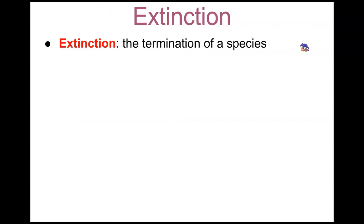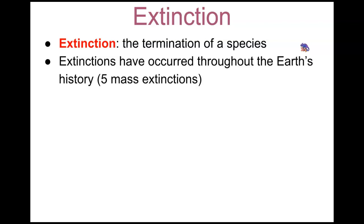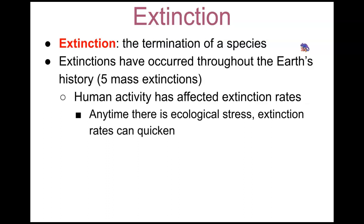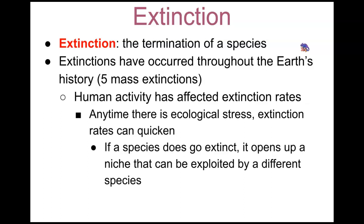Lastly, extinction is the termination of a species. When species are alive they are extant, but when they're gone they're extinct. Extinctions have occurred throughout Earth's history — there have been five known mass extinctions. Human activity has affected extinction rates, and anytime there is ecological stress, extinction rates can quicken. Ultimately, if a species does go extinct, it opens up a niche that can be exploited by a different species, which could lead to a new species or population of species over time.